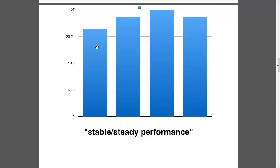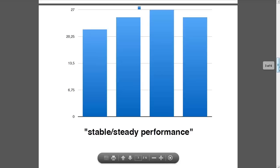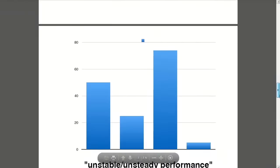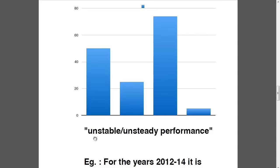If the diagram of a certain value looks like that, then we can talk about a 'stable' or 'steady' performance. On the contrary, if a value in the diagram looks like that — it is kind of unpredictable, we cannot predict its evolution — then we talk about an 'unstable' or 'unsteady' performance.